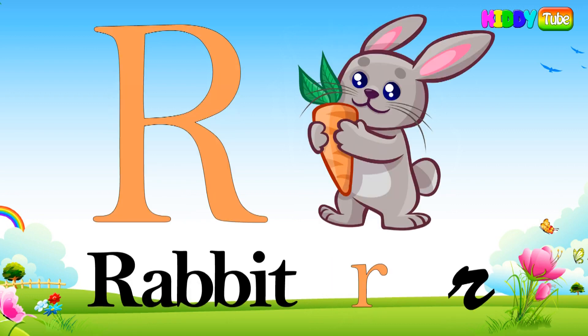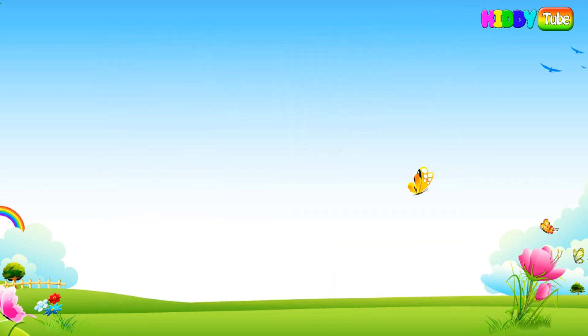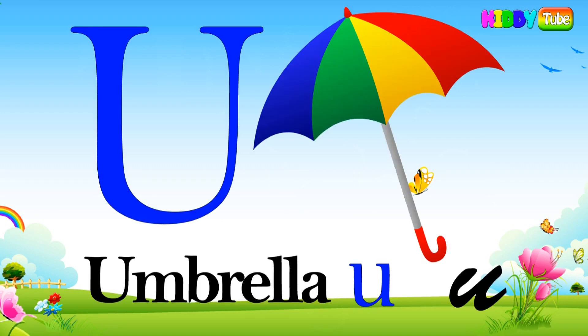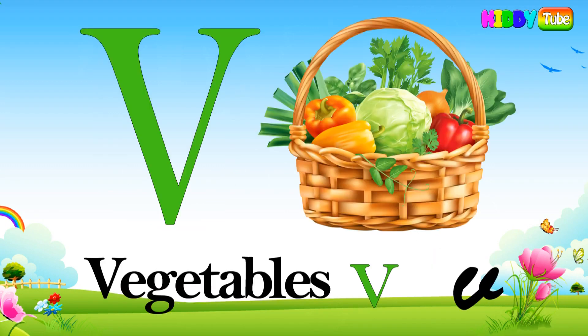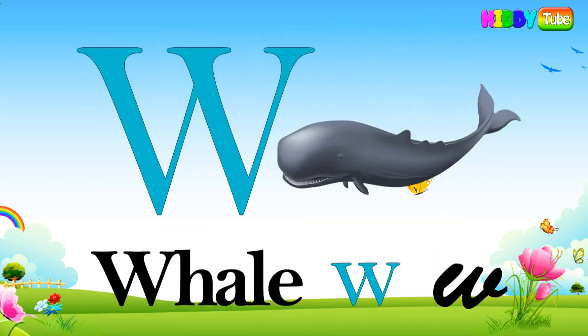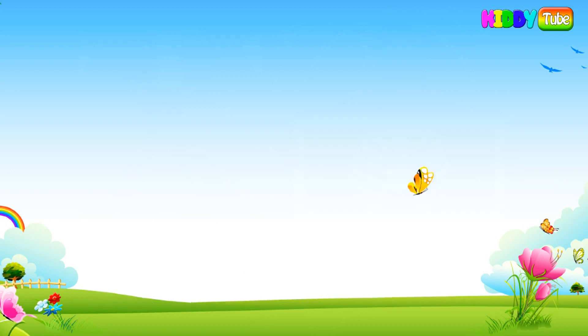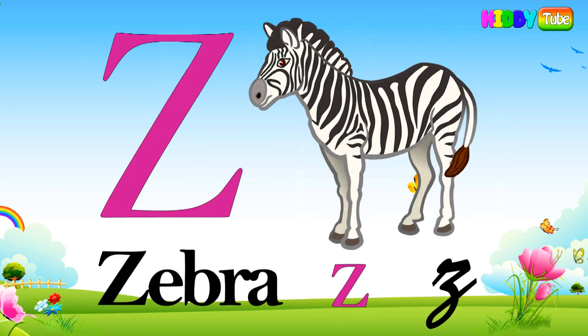R for rabbit, S for snake, T for turtle, U for umbrella, V for vegetable, W for whale, X for x-ray, Y for yak, Z for zebra.